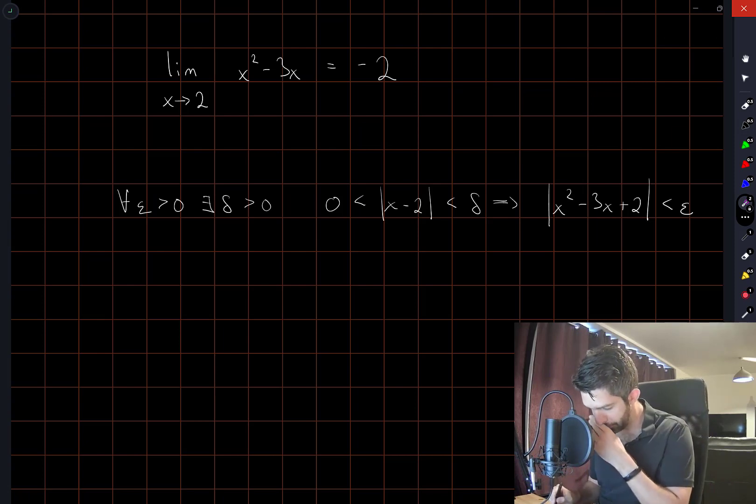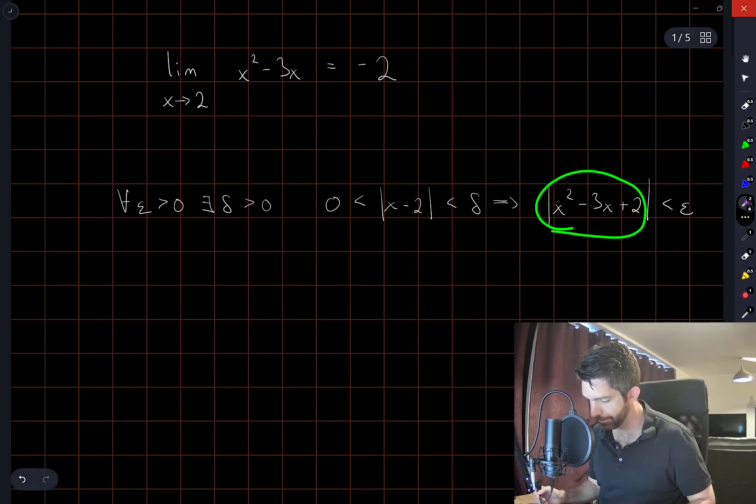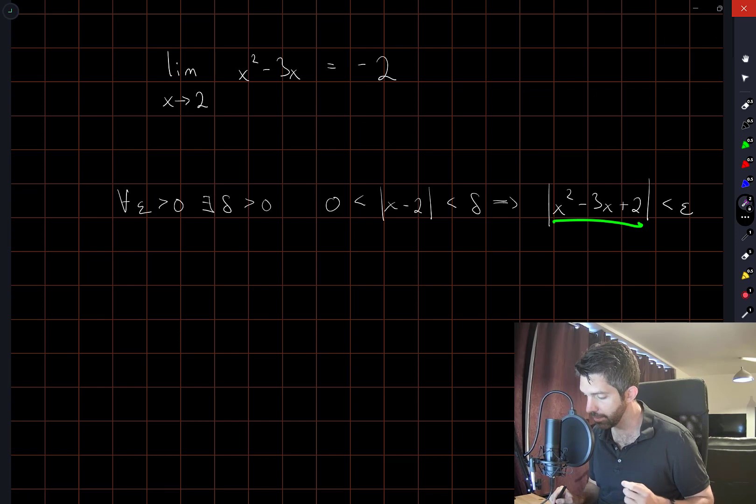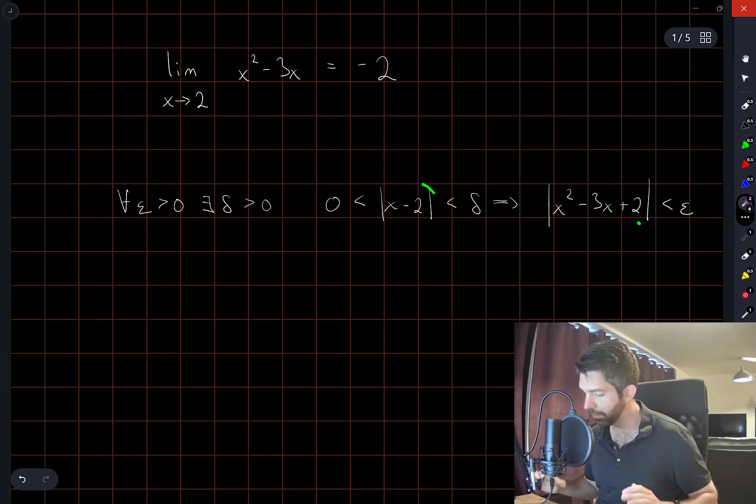But the first thing that comes to mind here is, I might try and factor that. Because just looking at this immediately, in fact, you can factor this in your head. This is going to be x minus 1 times x minus 2. And we have an x minus 2 here.